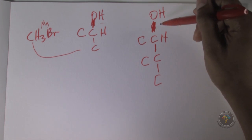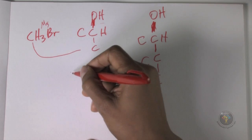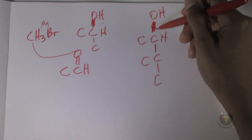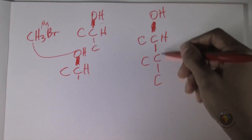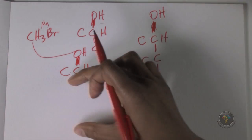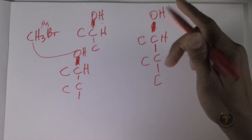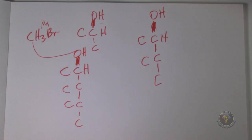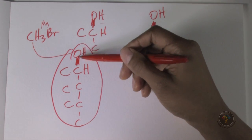Cycle 2: the new Grignard (now carrying more carbons) attacks the acetaldehyde carbonyl again, electrons go up. We now have C-C-C. Fourth step again converts OH to halide. Cycle 3: the Grignard attacks acetaldehyde once more — we get 1-2-3 carbons and another carbon on the side. After the acid step we have the final product.